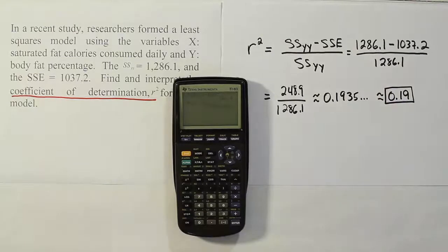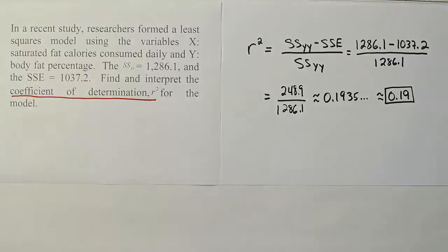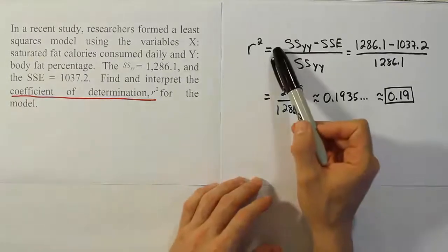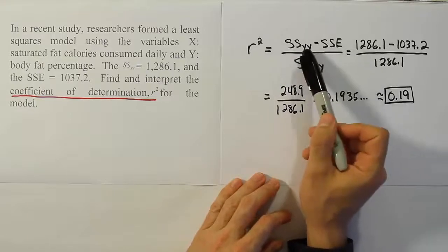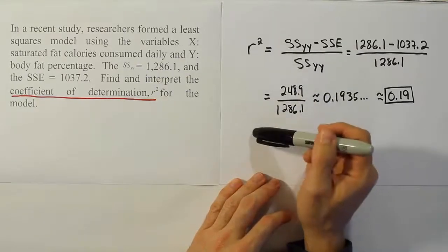Now, how do we interpret this? Well, remember, when we look at our formula, it gives away the interpretation. We have a simple linear regression model here. What that means is our simple model is going to try to predict Y by using X. So, we have one predictor, one response.